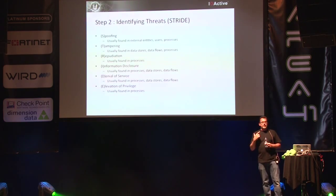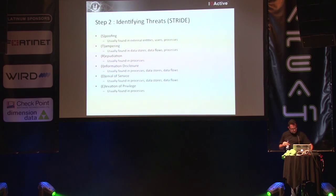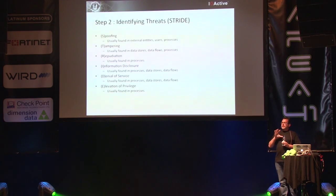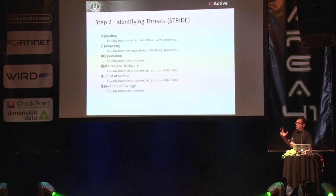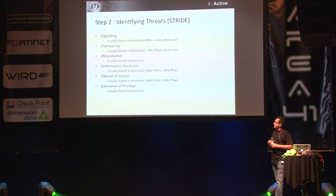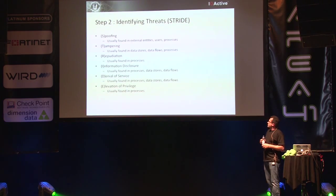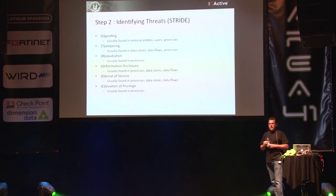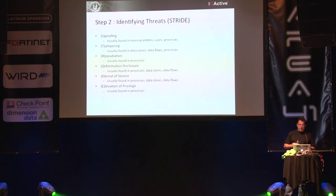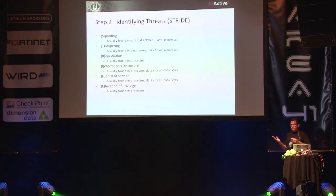Repudiation is being able to say who did what, when, and why within your system — if you can subvert that, you can break a system, usually found in processes. Information disclosure is well understood, found in processes, data stores, and data flows. Denial of service threats are also found in processes, data stores, and data flows. Elevation of privilege — the golden one — is usually found in processes themselves.